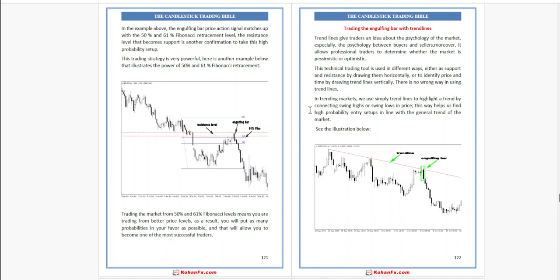This trading setup is very powerful. Here is another example that illustrates the power of 50% and 61% Fibonacci retracement. Trading the market from these levels means you are trading from both price levels. As a result, you will put as many probabilities in your favor as possible, allowing you to become one of the most successful traders.